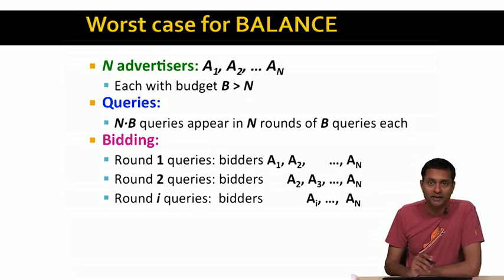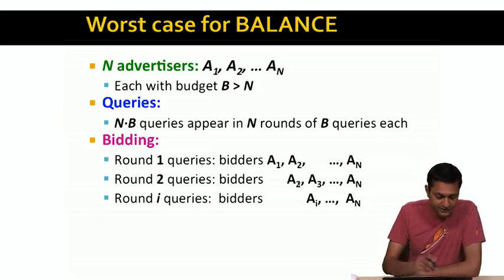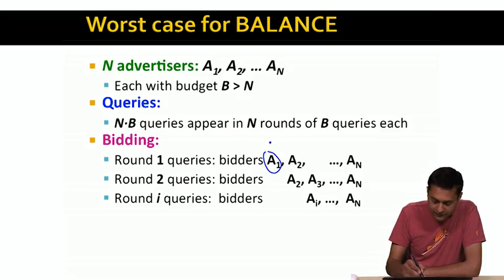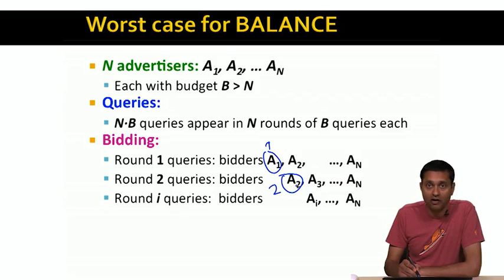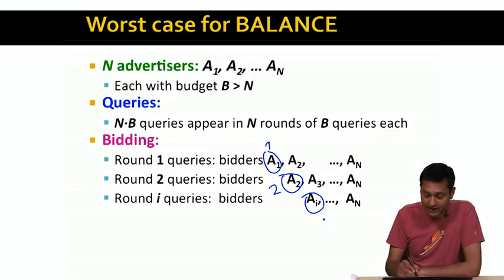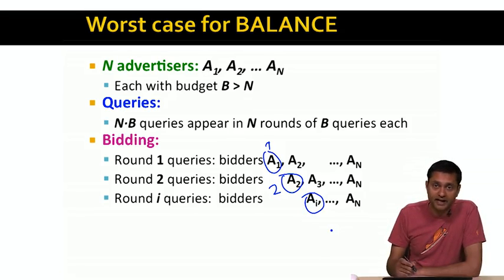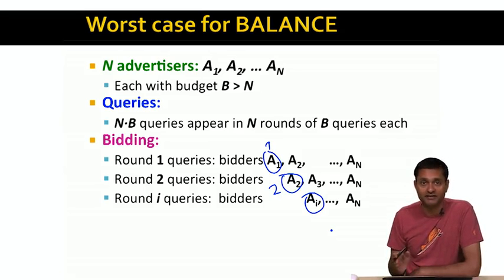The optimal algorithm in this case is to assign the round I queries to the ith advertiser — assign all the round one queries to A1, all the round two queries to A2, and so on. Since each advertiser has budget B and each round has exactly B queries, the optimal algorithm is able to assign each query to some advertiser. So the revenue of the optimal algorithm is equal to the number of queries, which is N times B.